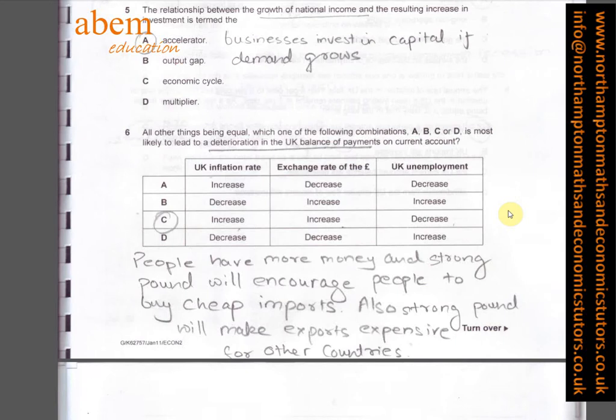In question six, the answer is C. People have more money, and a strong pound will encourage people to buy cheap imports. Also, a strong pound will make British exports more expensive for other countries to buy. Hence C is the answer.